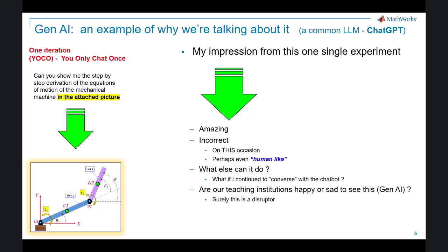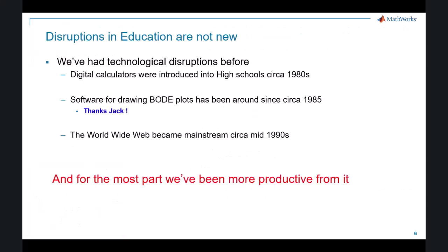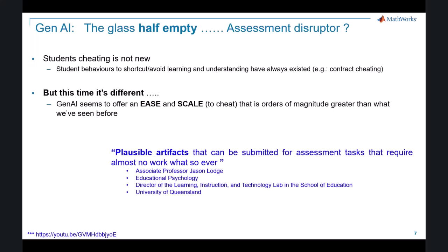I wanted to continue talking with the chatbot, but I was left wondering what our teaching academics think of this new capability. This certainly isn't the first technological disruption we've experienced — we've had digital calculators in high schools in the early 80s, software capable of drawing Bode plots in the mid-80s, and the World Wide Web going mainstream in the early to mid-90s. For the most part, we've been more productive because of these disruptions. But this time it does feel different — Gen AI makes cheating easier and more accessible than ever before.